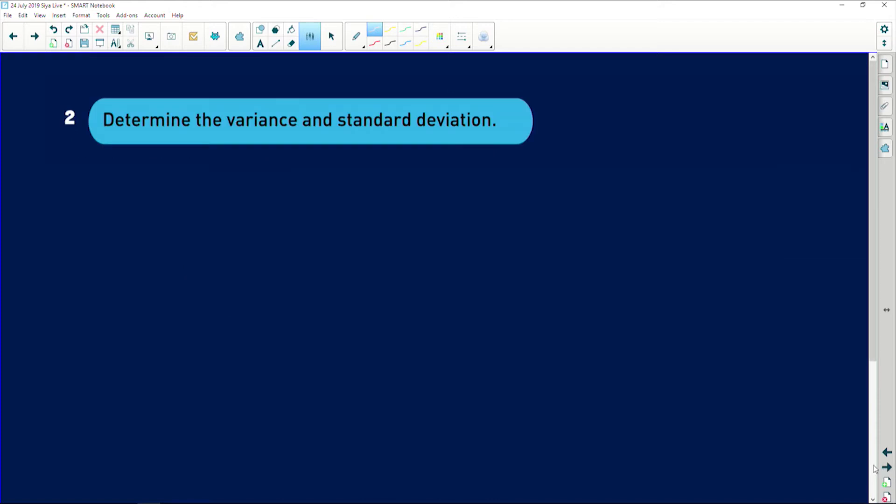The second question wants us to find the variance and standard deviation. Now, this is what I want you guys to please understand between the two. Standard deviation squared gives us the variance. The square root of the variance gives us the standard deviation. So, SD, which is standard deviation, squared is equal to the variance. But the square root of the variance is then the standard deviation. I'm just trying to show you what the difference between the two is.